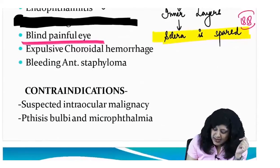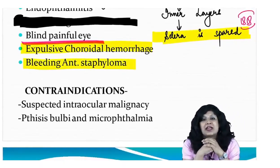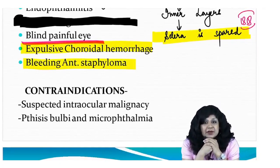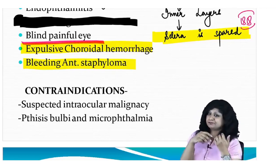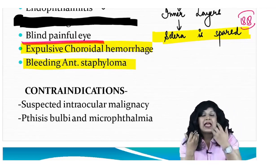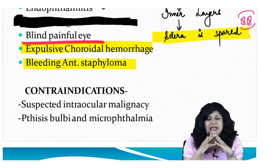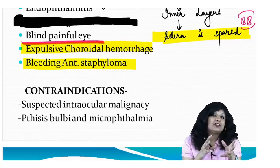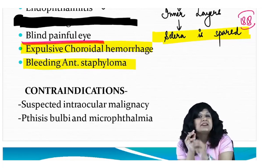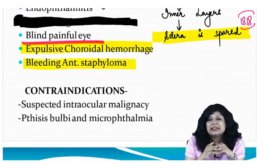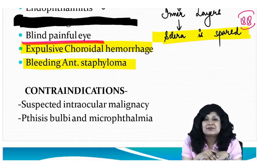Further indications include expulsive choroidal hemorrhage and bleeding anterior staphyloma. For example, if a patient with hypertension develops expulsive choroidal hemorrhage during cataract surgery and it becomes unmanageable, evisceration can be performed. Similarly, bleeding anterior staphyloma is also an indication.